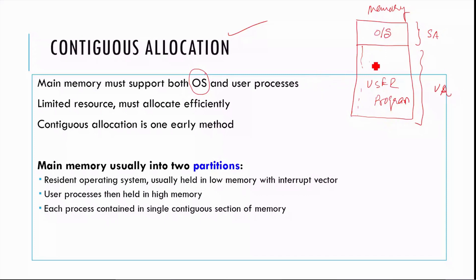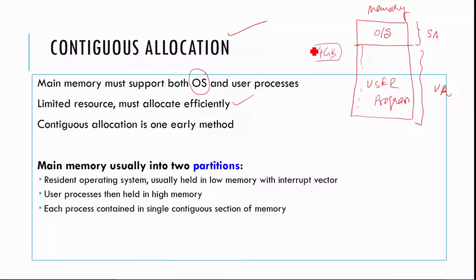The processes related to the operating system run in the system area, and user programs run in the user area. Limited resources must be allocated efficiently. For example, 4 GB of RAM must be shared among different processes. Other resources like I/O devices and the CPU are also shared simultaneously.